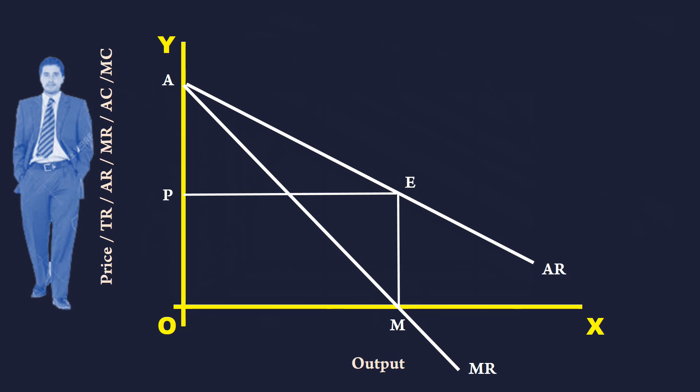Now, it is time to know in which part of the average revenue curve normally a monopolist will prefer to operate. For this, we have to identify three important parts on the average revenue curve.